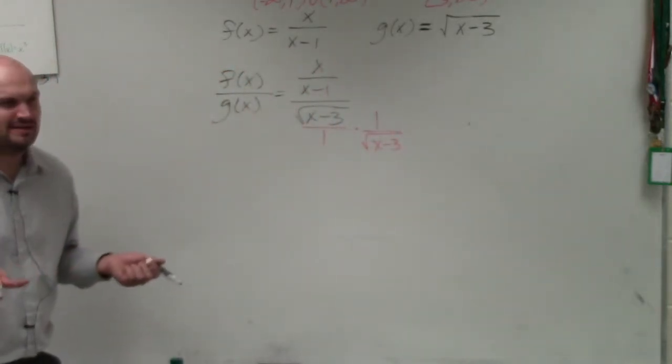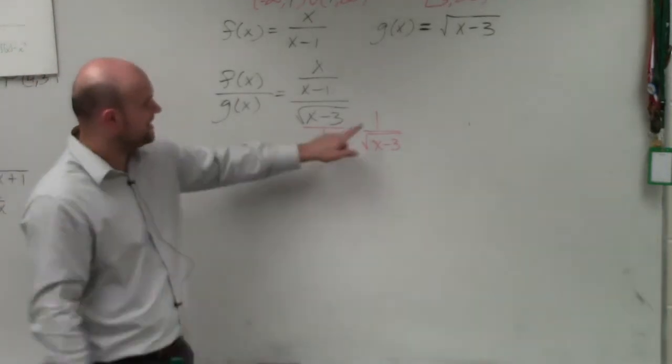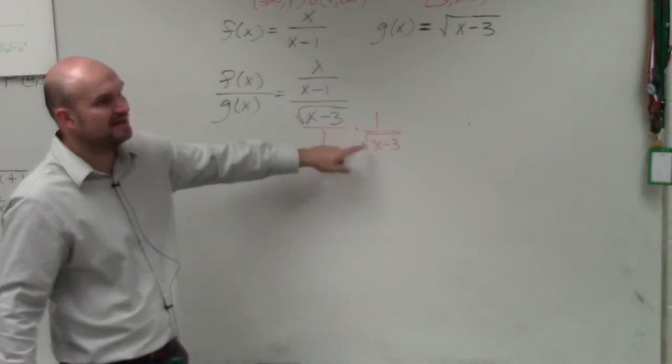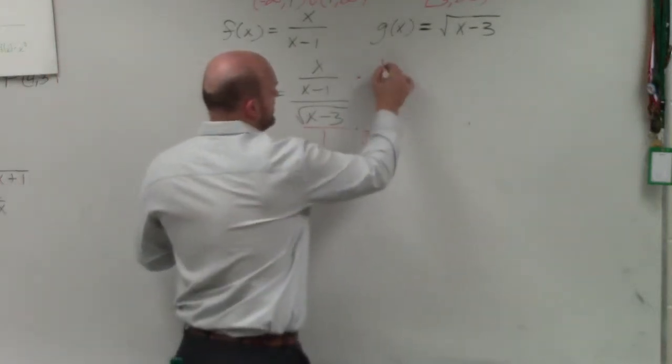Because you don't want to divide by a fraction. Instead of dividing by fractions, we'd like to multiply by the reciprocal. Well, since I can't just multiply a fraction by its reciprocal in the denominator, I have to do that in the numerator as 1, as well.